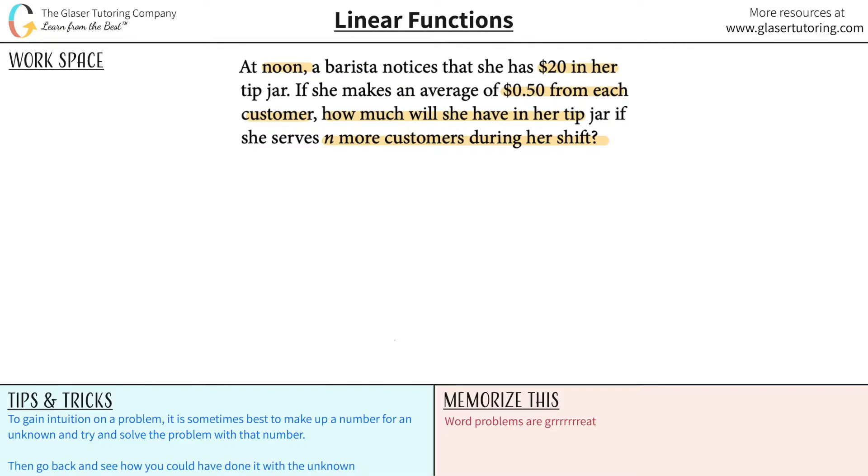Now, part of this, whenever you become confused, especially when they're giving you an unknown N or X or whatever the case is, sometimes it's a very useful strategy to just make up a number for N and see if you can solve the problem. So let's just say that N isn't there and she's going to serve 10 more customers.